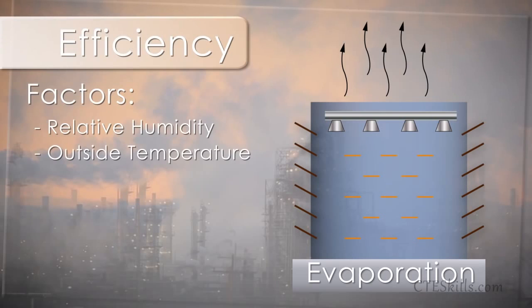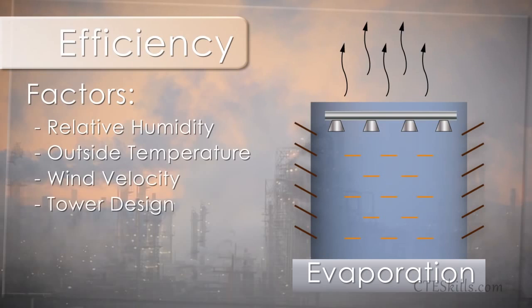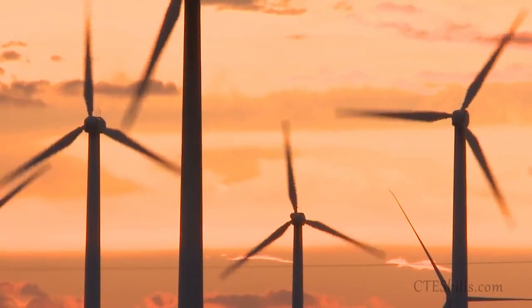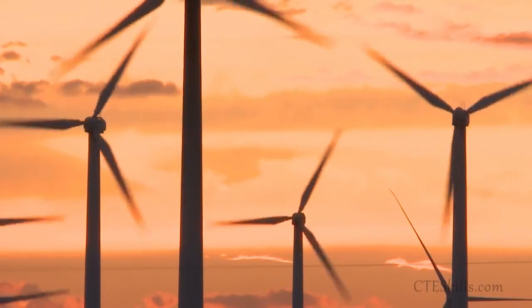Many factors can affect the efficiency of the evaporation in a cooling tower. Things such as relative humidity, outside temperature, and wind velocity can affect the efficiency. Even the design of the tower, water contamination, and outside equipment will also play a part.